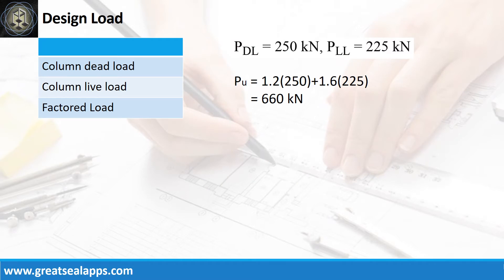The footing carries an axial dead load of 250 kN and axial live load of 225 kN, for a factored load of 660 kN.